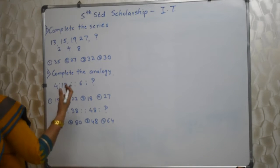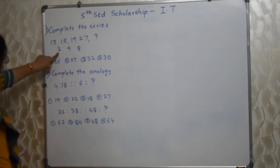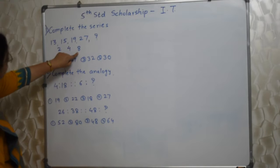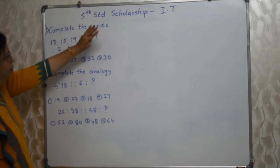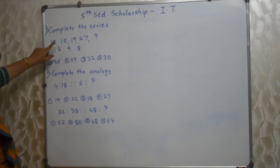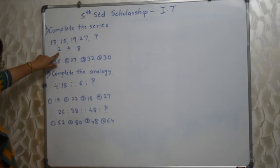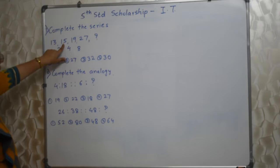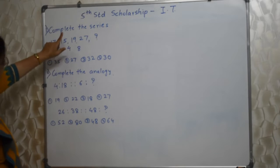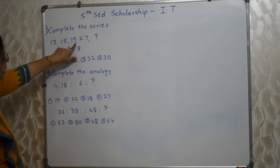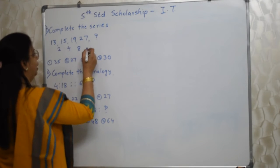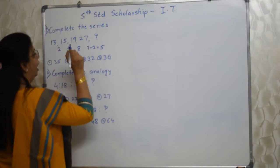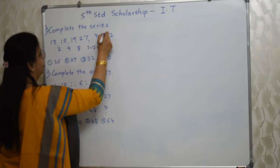Go back to the numbers. Why is the difference 2? Why is it 4? Why is it 8? From where did these numbers come? When they added 2 to 13, they had only 13. So from 13, how did they get 2? Yes — 3 minus 1 is 2. That's why they added 2 to get 15. Then 5 minus 1 is 4, added to 15 to get 19. Then 9 minus 1 is 8, added to 19 to get 27. So now, 7 minus 2 is 5. We need to add 5 to 27 to get 32.